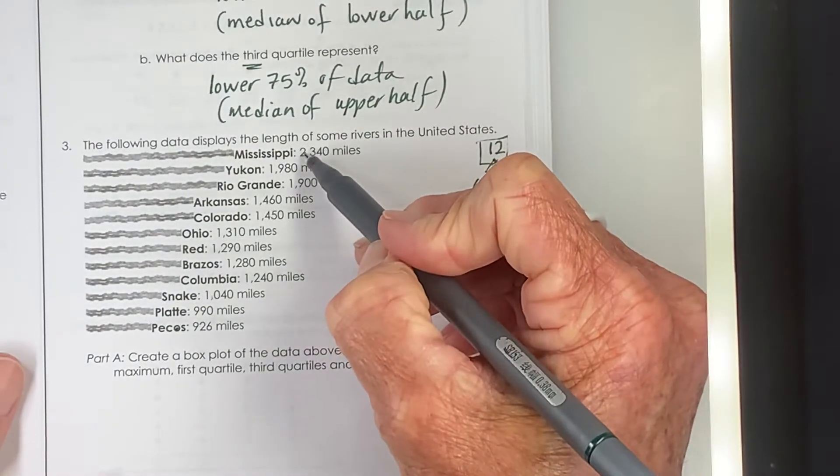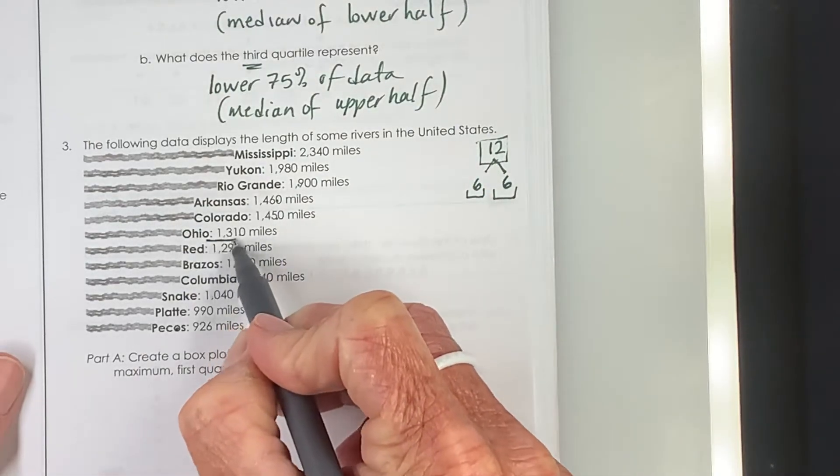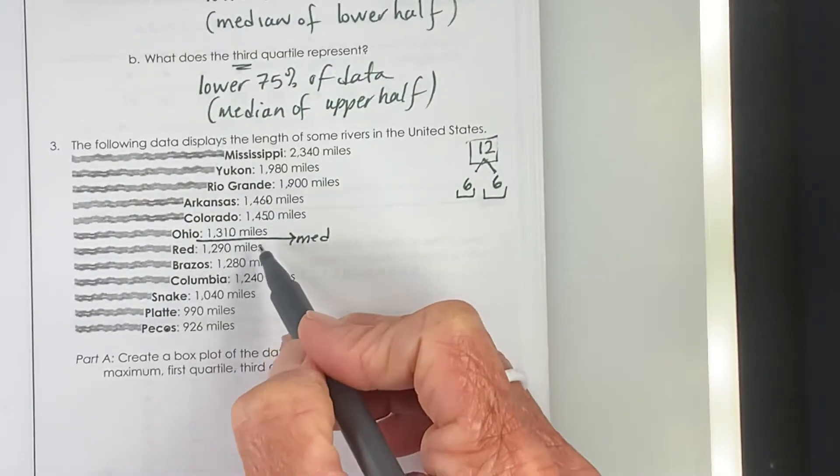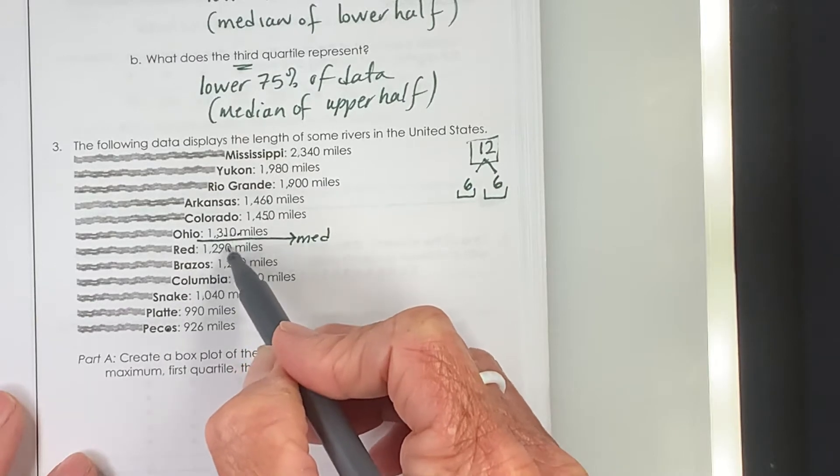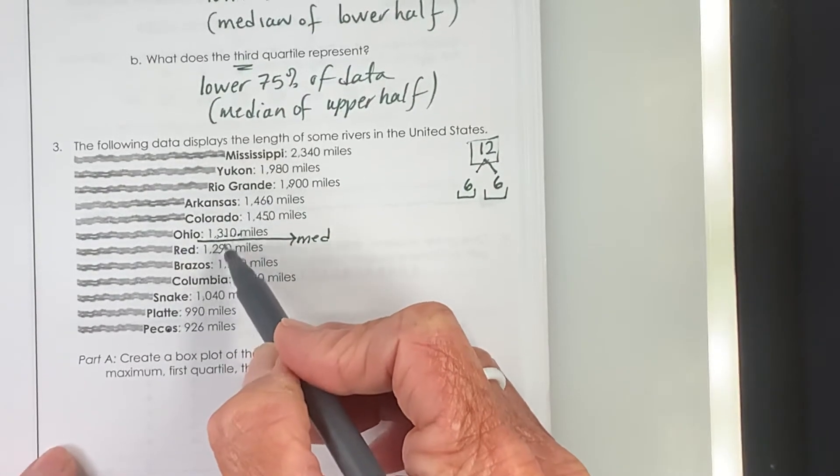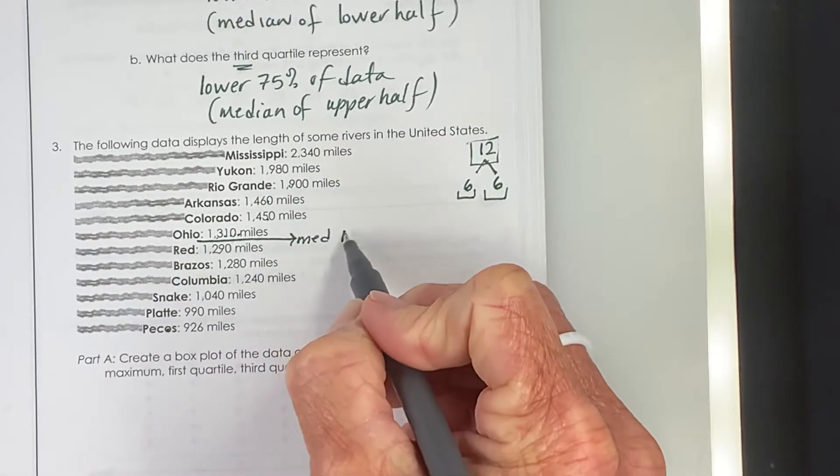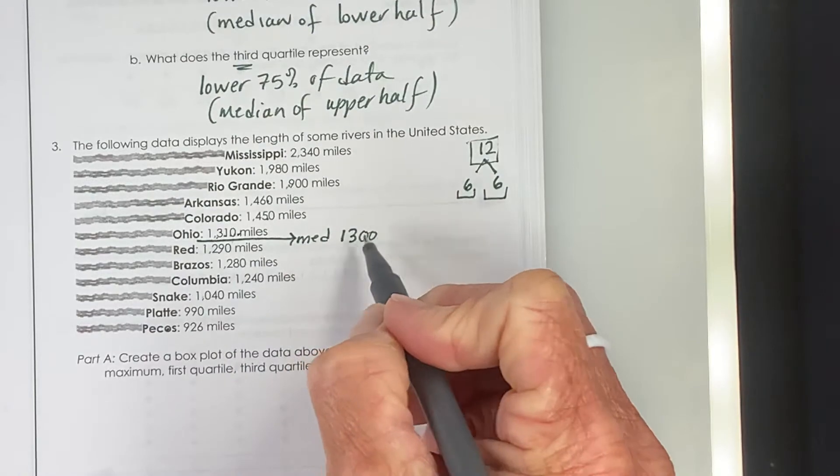So coming in from the high end 1, 2, 3, 4, 5, 6, I know that right here in between the Ohio and the Red Rivers would be our median. I have 1,310, 1,290. The number that's exactly halfway between them is 1,300. If you were to add those two numbers together, get their sum and divide by two, you would get 1,300.